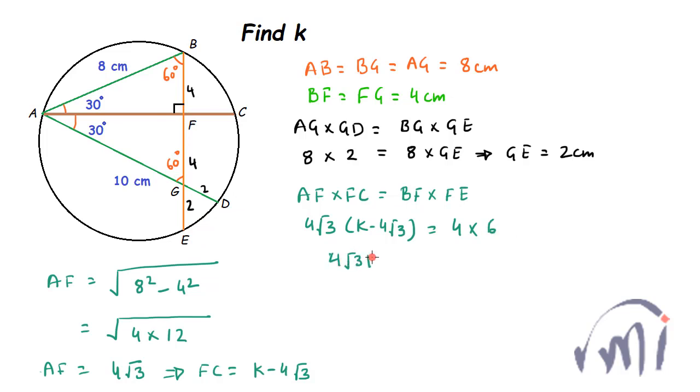So 4 root of 3 K minus 48 will be equal to 24 or you can say 4 root of 3 K will be equal to 24 plus 48, that is 72 or K will be equal to 72 divided by 4 root of 3. And now, if I multiply it by root of 3 divided by root of 3.